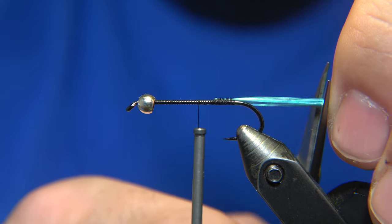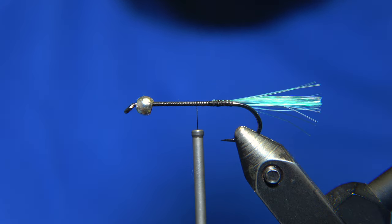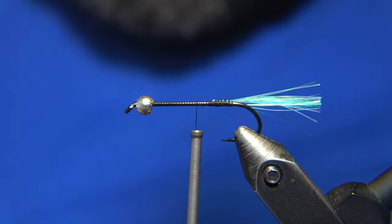The tail, we are going to cut it, it's almost the length of the hook shank, like two-thirds or so.